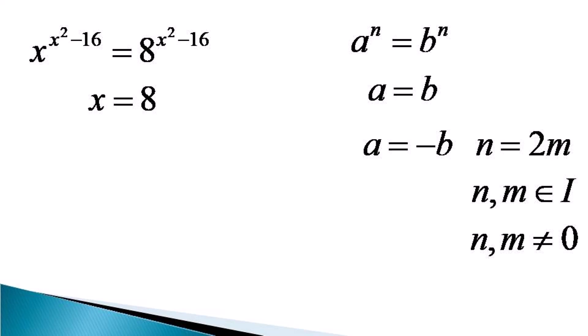We put the value of x as equal to 8 in the index and see its value. So x square minus 16, the index, becomes equal to 8 square minus 16, which becomes equal to 64 minus 16, and which comes out to be 48, an even integer.